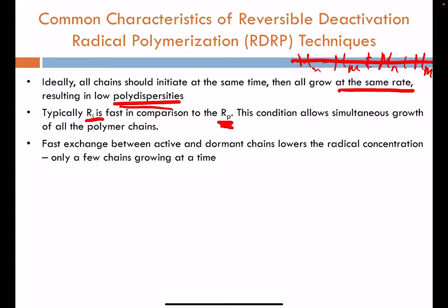A key feature is an equilibrium and fast exchange between the active and dormant chain, so that activation of a chain can happen quickly and we can add monomer with a rate law governed by Kp. This will result ultimately in very few chains growing at a time to suppress the radical concentration and allow for the elimination of those termination reactions.